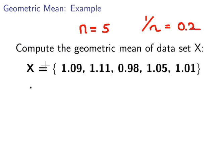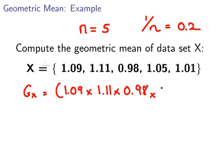The geometric mean, G of X, equals 1.09 times 1.11 times 0.98 times 1.05 times 1.01, all to the power of 0.2.